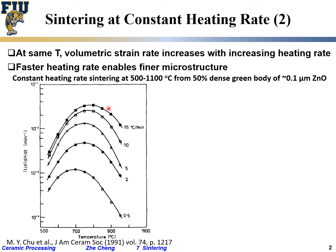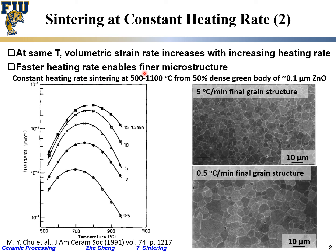What people find is that faster heating rate gives shorter total sintering time for constant rate sintering, but also enables a better microstructure. SEM images of sintered zinc oxide after thermal etching, for two different heating rates, clearly show that the faster the heating rate — meaning a shorter overall sintering time schedule — results in much smaller grains. For ceramics, especially in mechanical applications, smaller grains are preferred.